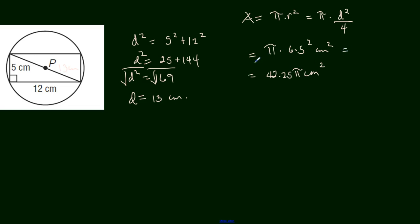If we want to use the diameter, then we have pi multiplied by 169, that is the square of 13, square cm divided by 4. If you divide that, then you will get the same, 42.25 pi and then the square cm.